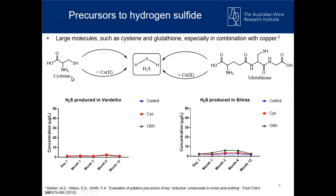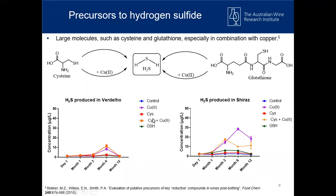So it does appear that cysteine and glutathione alone do not promote H2S formation significantly, especially considering the amounts we added. When we added copper to the wines just by themselves, without any precursors, there was quite a lot of H2S being produced, especially in the red wines. So copper was acting on some unknown precursors we haven't yet identified in the wine. Interestingly, when we added the combined cysteine and copper, for the white wines there wasn't a dramatic increase — no more H2S than what was produced by copper by itself — and in the Shiraz we actually saw a little bit less H2S.